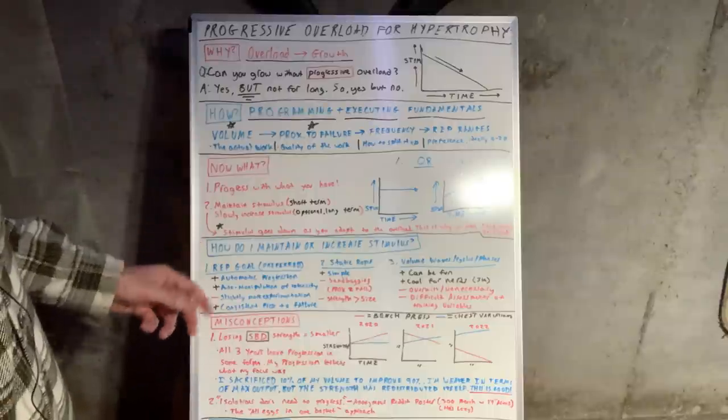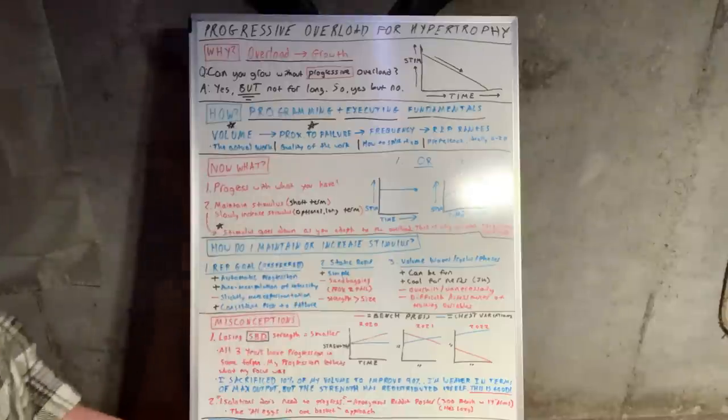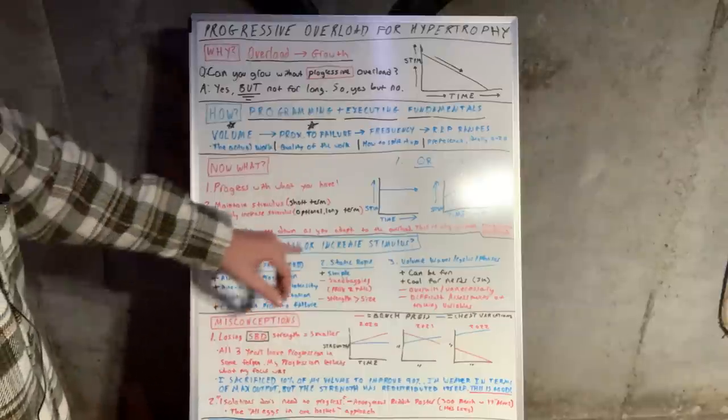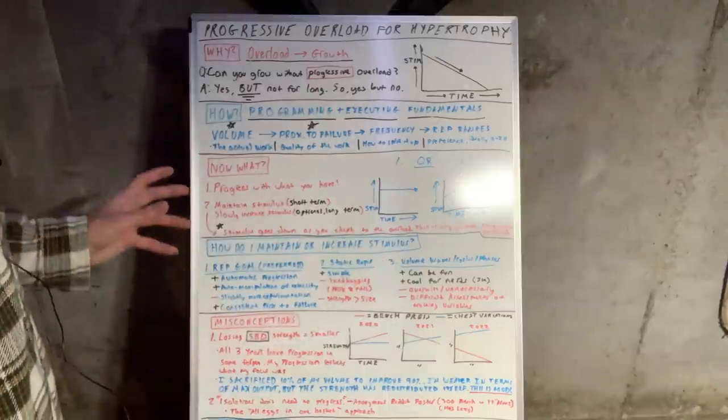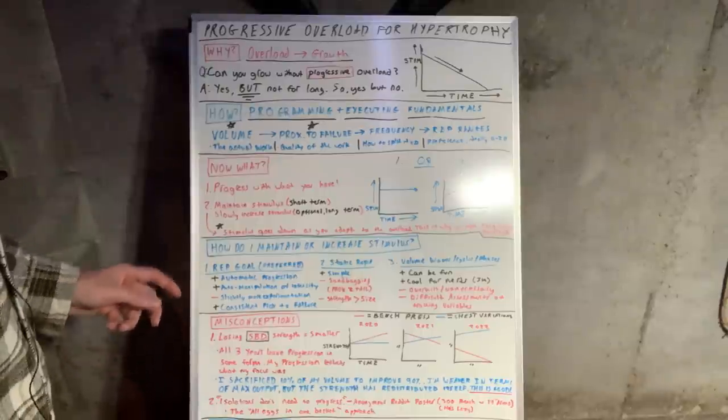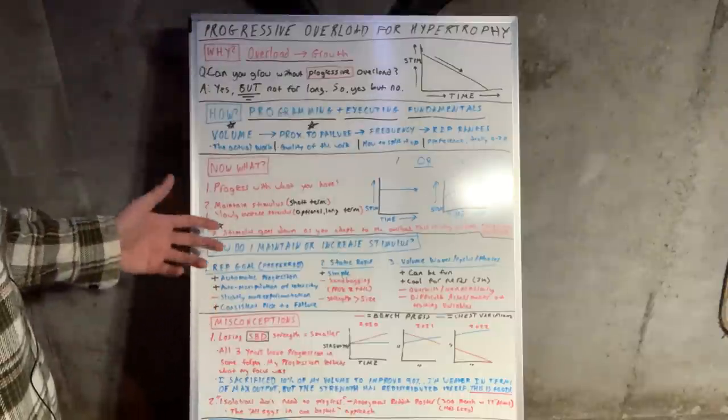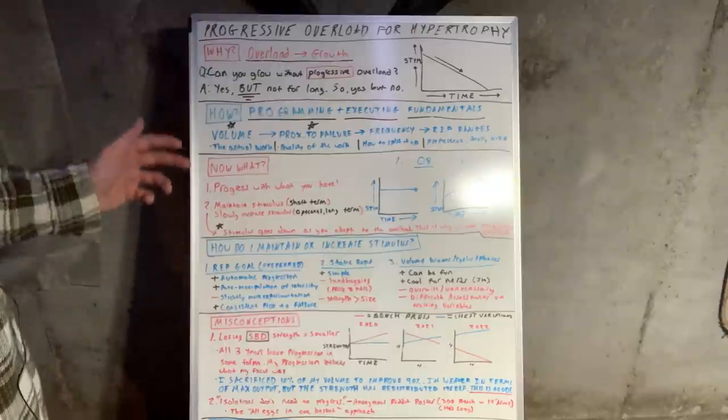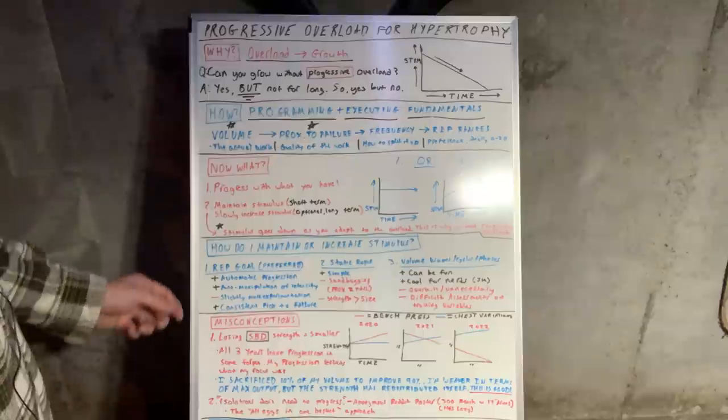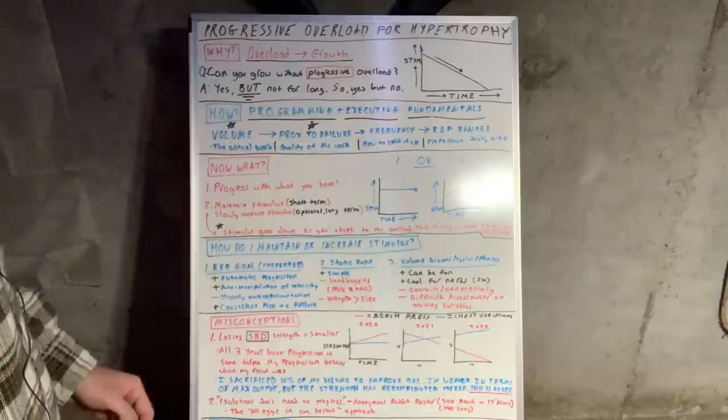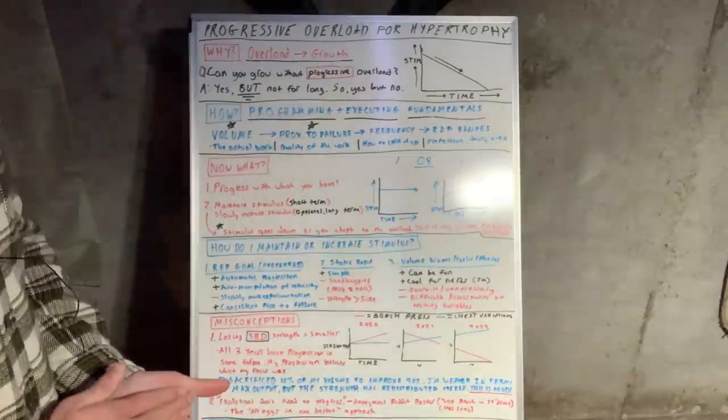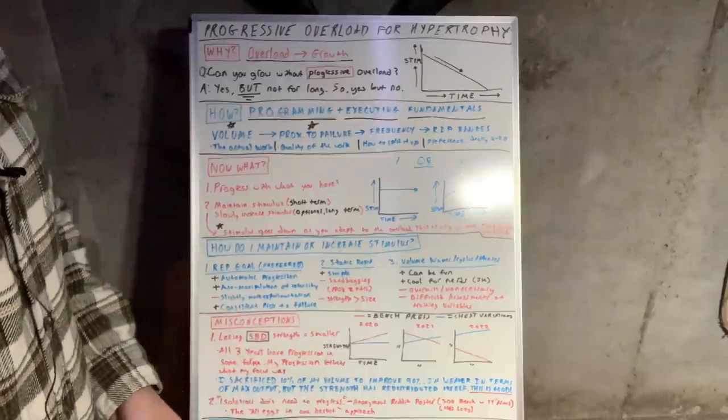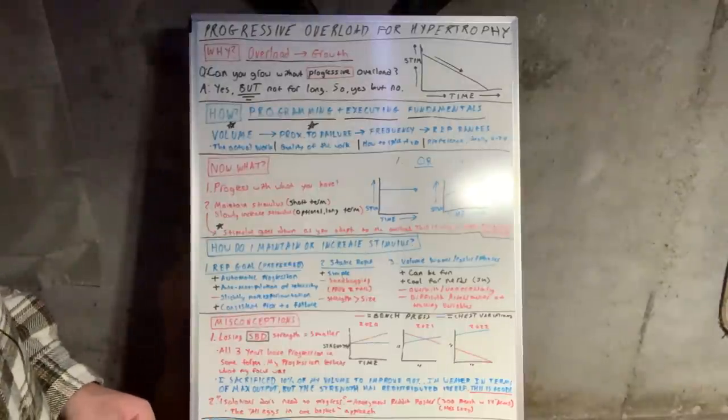Next part here: how do I maintain or increase stimulus? There's three different methods that I picked, and these are just three that I think are pretty common. There's obviously a bunch of different ways to train, but I have the way that I train, probably the most common one, and then volume one, which is just another thing in its own that a lot of people like to use as well. Number one, the rep goal system, which is preferred. This is what I talk about on the channel. This is what I train with and what I have most people that I work with train with. The pro, the plus is gonna be the pros, minus is the cons. The first one I have here is that it's automatic progression. You're overloading in reps. When you train with reps in reserve or when you train with a certain proximity to failure, as you adapt, the rep count from each set will slowly start to increase and it's an automatic progressive overload.